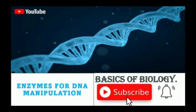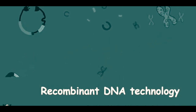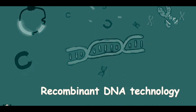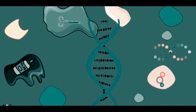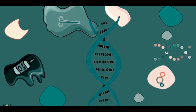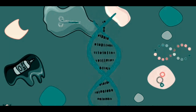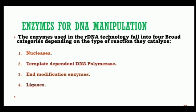Hello and welcome to Basics of Biology. Today we are going to discuss enzymes for DNA manipulation. Recombinant DNA molecules are constructed by in vitro covalent attachment of the desired DNA fragment to any sequence capable of independent DNA replication. For this recombination purpose, we are collecting all the desirable genes and recombining them together, and for this we require certain enzymes called manipulative enzymes.